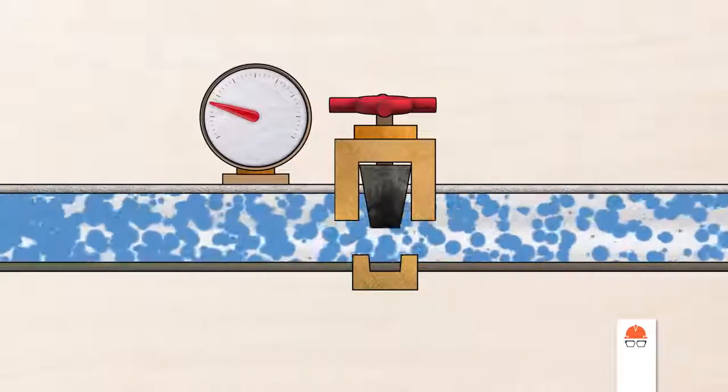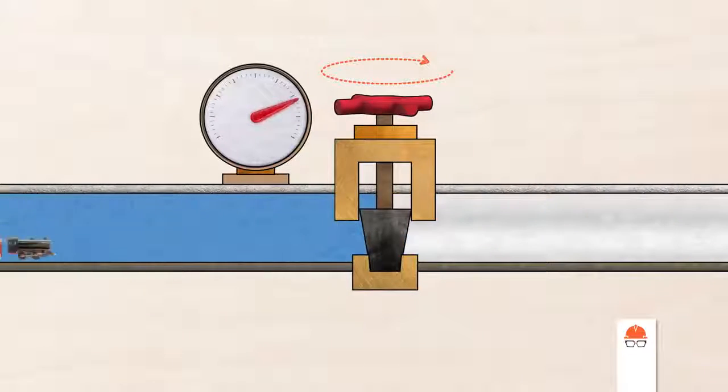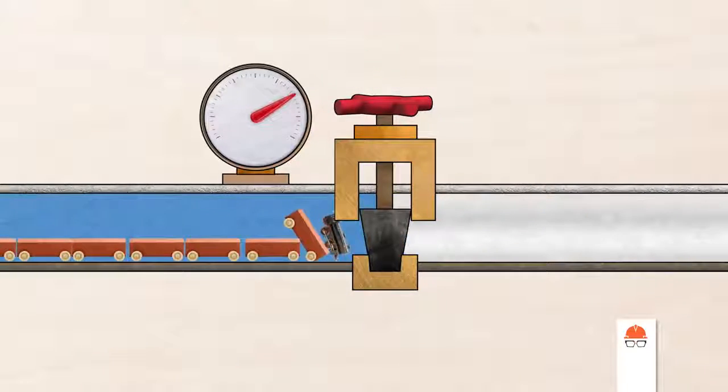Imagine you're an operator at the end of this pipeline in charge of closing a valve. If you close it quickly, you've essentially slammed those trains into a brick wall, and the pressure spike that results from such a sudden change in momentum can rupture the pipe or cause serious damage to other parts of the system.